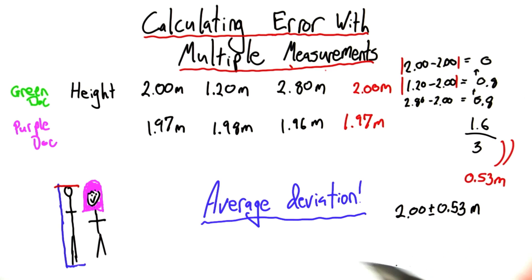The way we would write this is by saying, the green-haired doctor measured my height to be 2.00 meters plus or minus 0.53 meters.